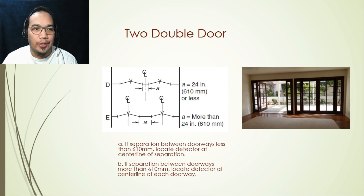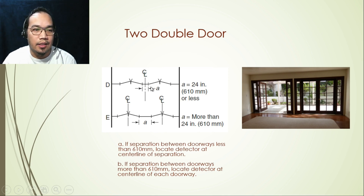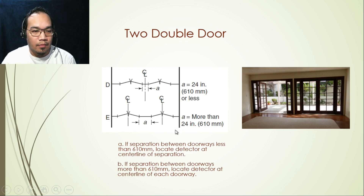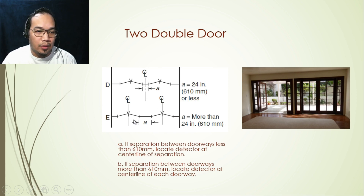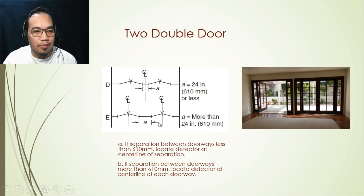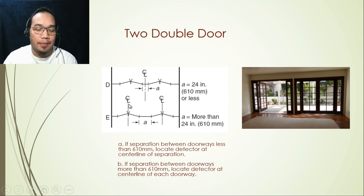If we have two sets of double doors, we measure the separation between the two doors. If the separation is less than 610 mm, we can locate one smoke detector at the center line of the separation. But if the separation between the two doors is more than 610 mm, we must consider a detector at each doorway, located at the center line of each doorway. So in that case, two detectors are required — one per doorway.